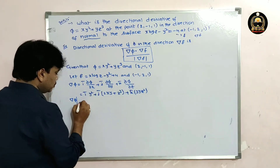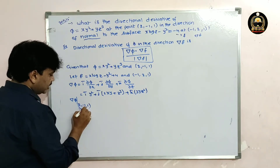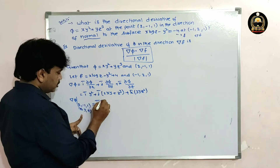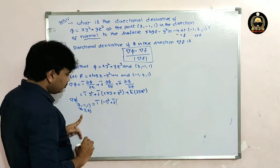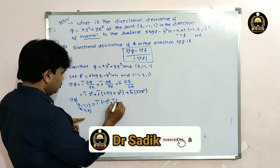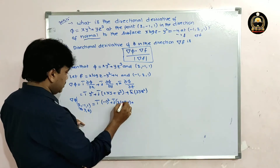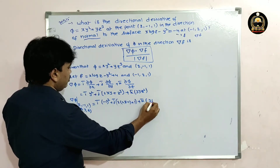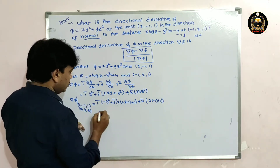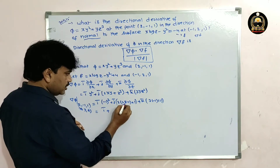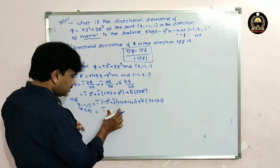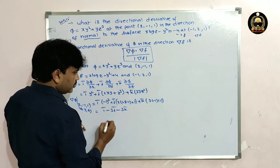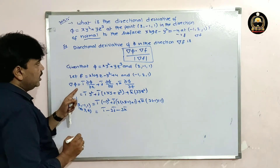Substituting the point (2, −1, 1) — where x=2, y=−1, z=1 — into del phi: i·(−1)² + j·(2·2·(−1) + 1³) + k·(3·(−1)·1²) = i·1 + j·(−4+1) + k·(−3) = i − 3j − 3k.